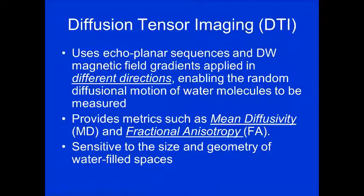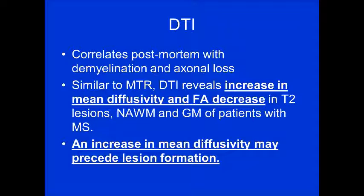DTI uses echo planar sequences with diffusion-weighted magnetic field gradients applied in different directions, enabling measurement of random water diffusion motion. Key metrics include mean diffusivity, or MD, and fractional anisotropy, or FA — sensitive to the size and geometry of white matter spaces. DTI correlates well with postmortem demyelination and axonal loss. In MS patients, there's an increase in diffusion and a decrease in FA. An increase in diffusion may precede lesion formation, detectable even before conventional MRI shows abnormality.